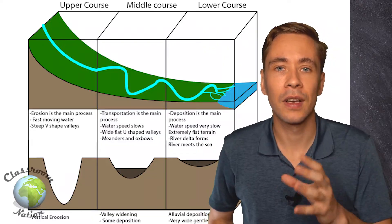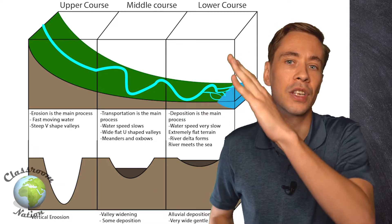Let's start where it all begins, in the upper course. The source of the river can be found here, typically in the mountains or hilly areas. The water is moving extremely fast, flowing down steep-sided valleys, and the river gradient is also very steep. There is an awful lot of water flowing through this system very fast. As you can see in this diagram, it forms a V-shaped valley.